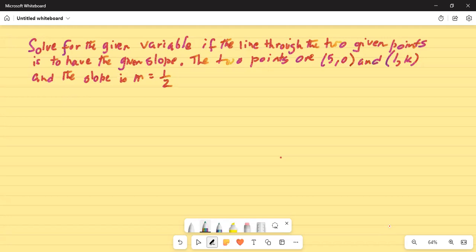Solve for the given variable if the line through the two given points is to have the given slope. The two points are (5, 0) and (1, k) and the slope is m equal to half.